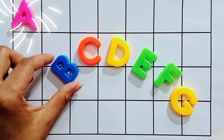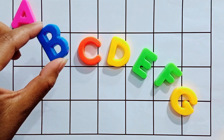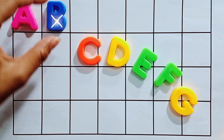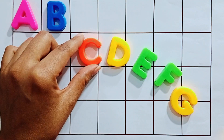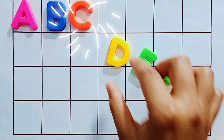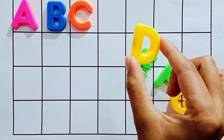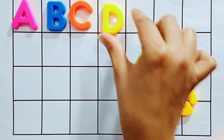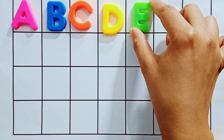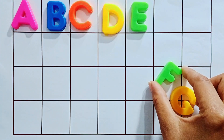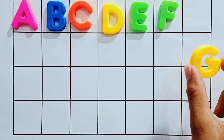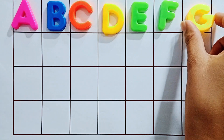A. After A, it comes B. Then it's the turn of C. Then comes D. E. Here goes F.